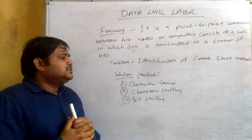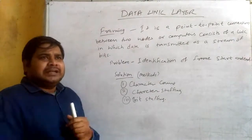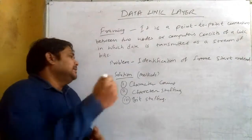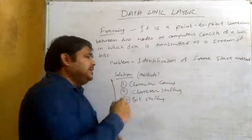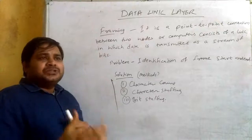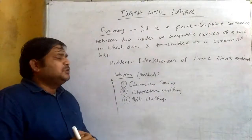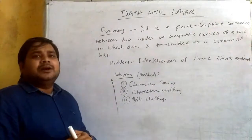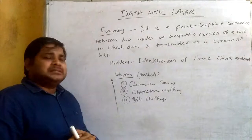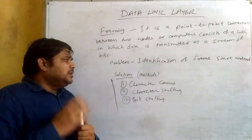These are the types of framing — basically the methods which are used in framing. The first method is character count. The second method is character stuffing. The third method is bit stuffing.